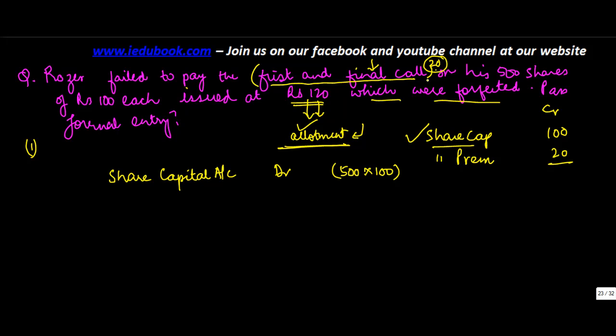The money is 20 into 100. Now because the shares were immediately forfeited after the first and final call, so I would assume that I would not have transferred this to calls in arrears account, so this must have been standing as first and final call due. So I credit first and final call account, 20 into 500. So 50,000 goes here, 10,000 goes here.